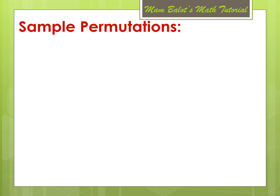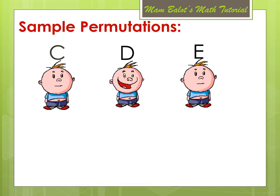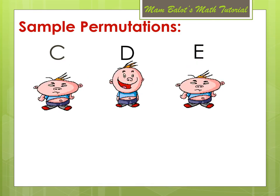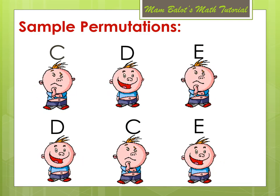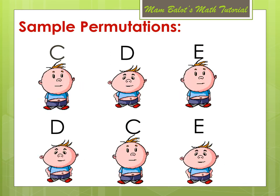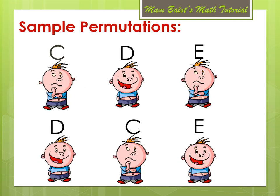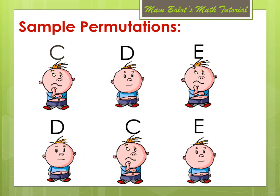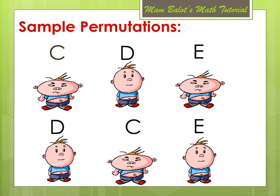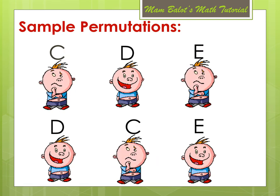One permutation would be choosing kids C, D, and E — the first choice is kid C, the second is kid D, and the third is kid E. Another permutation is choosing kids D, C, E. Observe that even though they are the same kids, their arrangement is different, because the first kid chosen is kid D, then the second is kid C, unlike the first permutation. So whenever two objects are not in the same place, they are a different permutation.